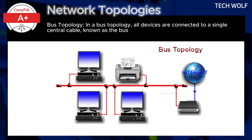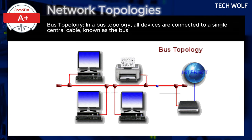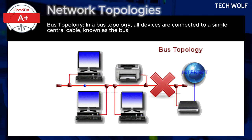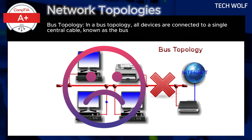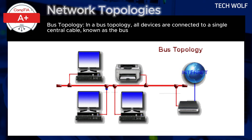However, a major drawback is that the network relies heavily on the central cable. If the bus fails or if this central cable fails, the entire network goes down. Additionally, as more devices are added to the bus, performance degrades since all devices share the same communication channel.